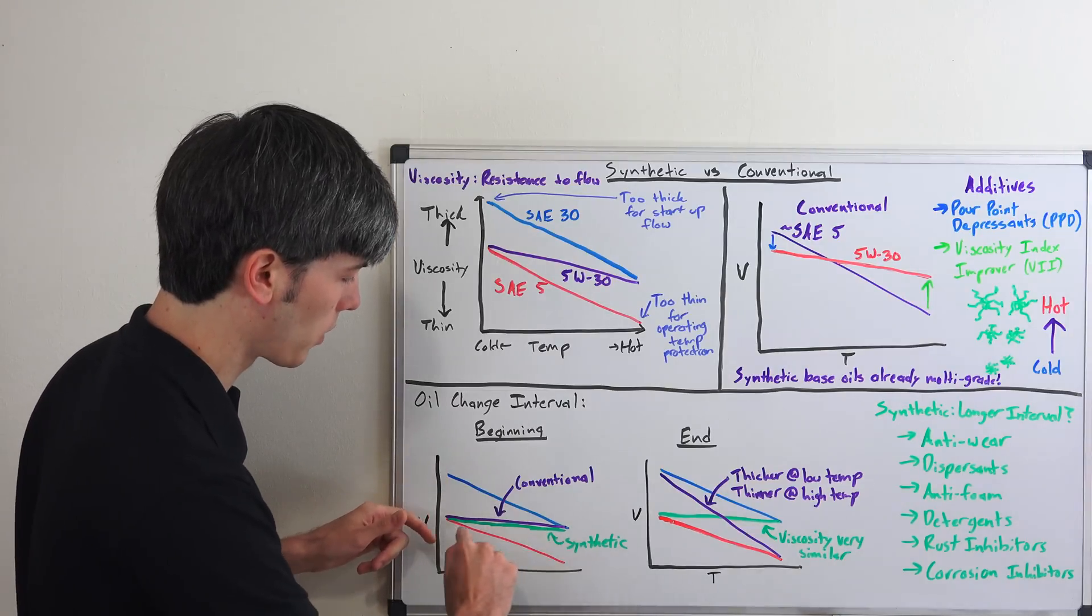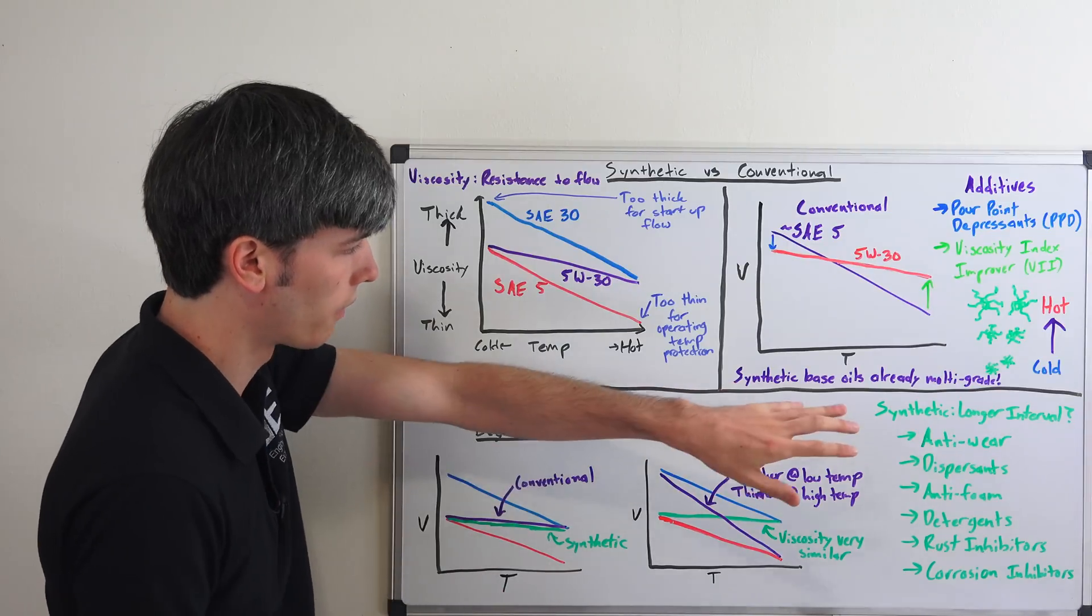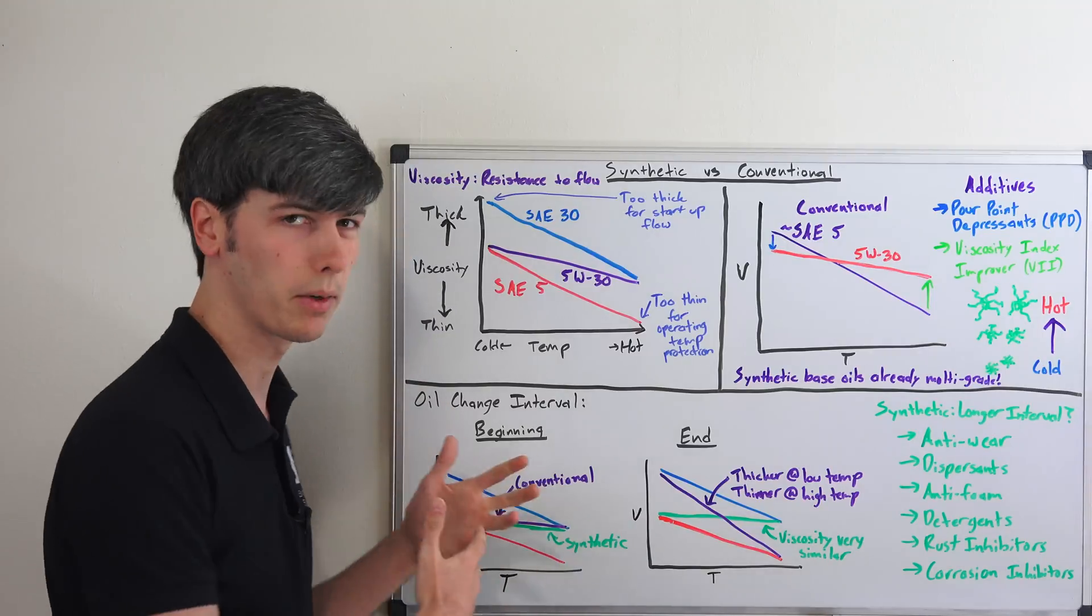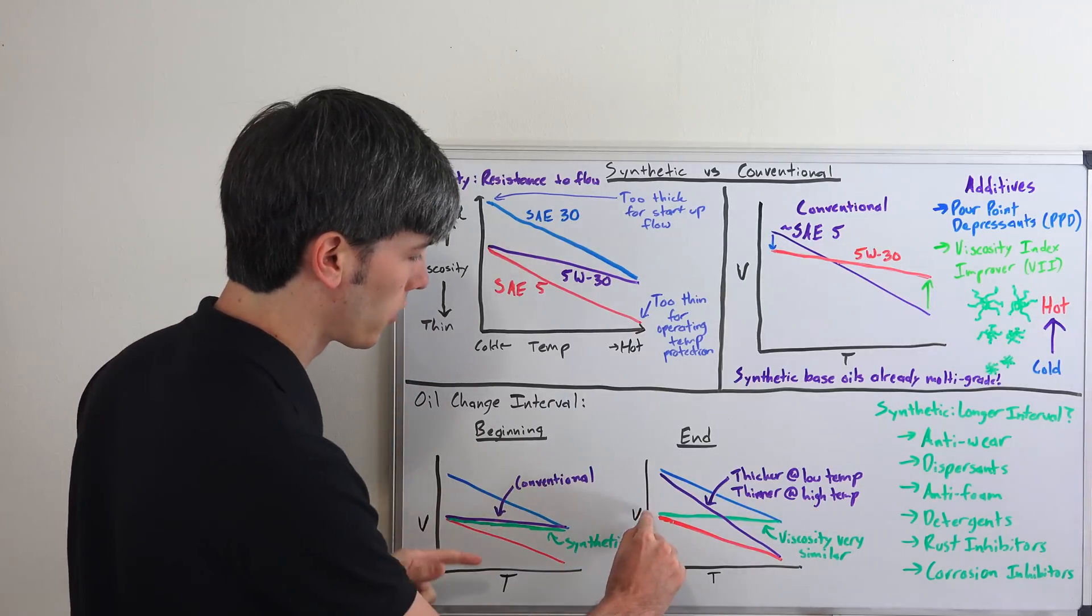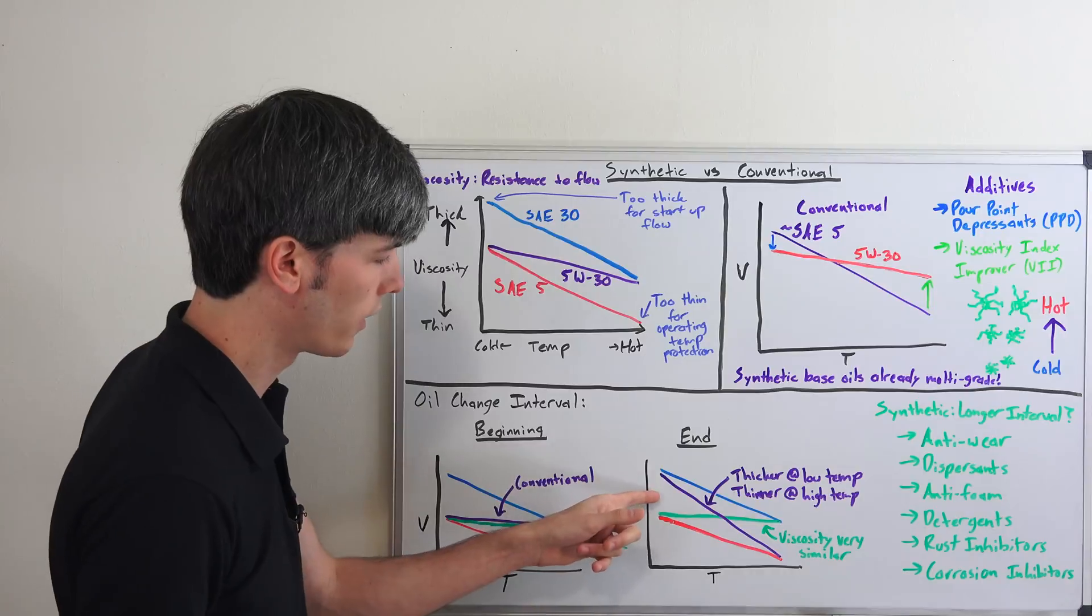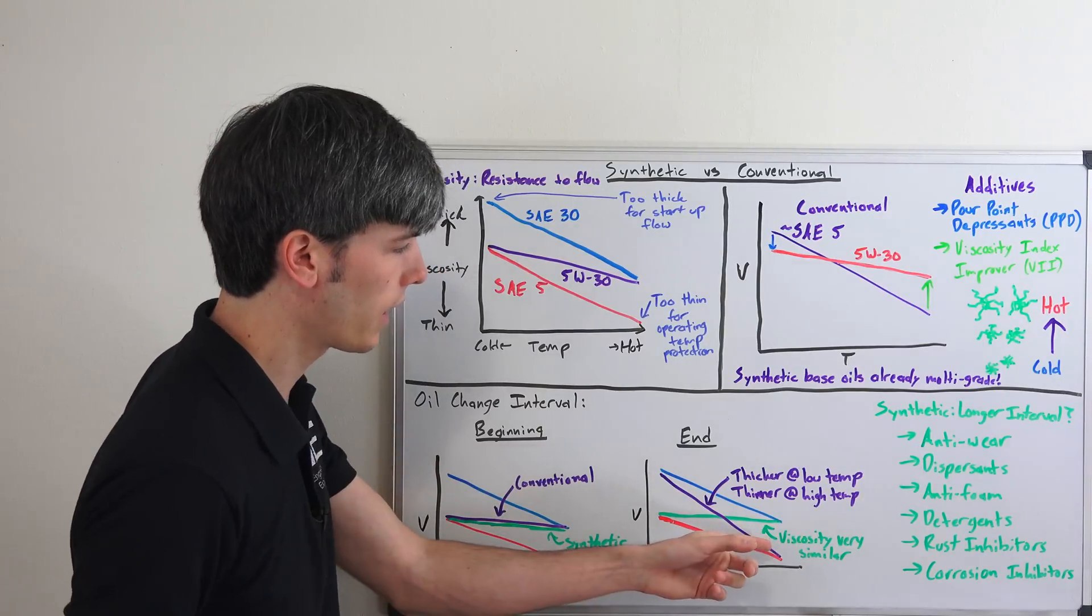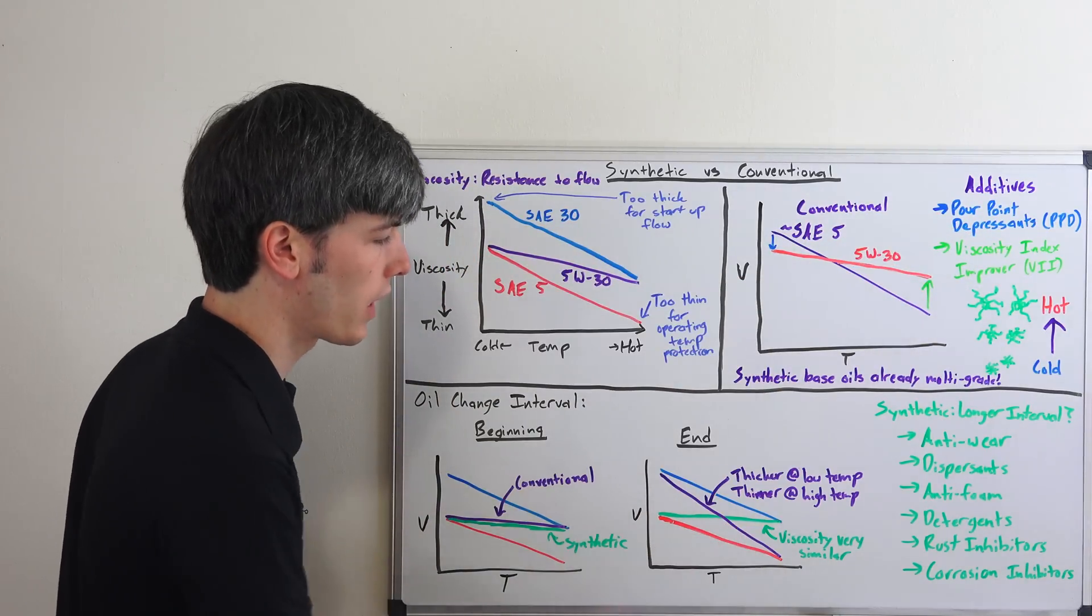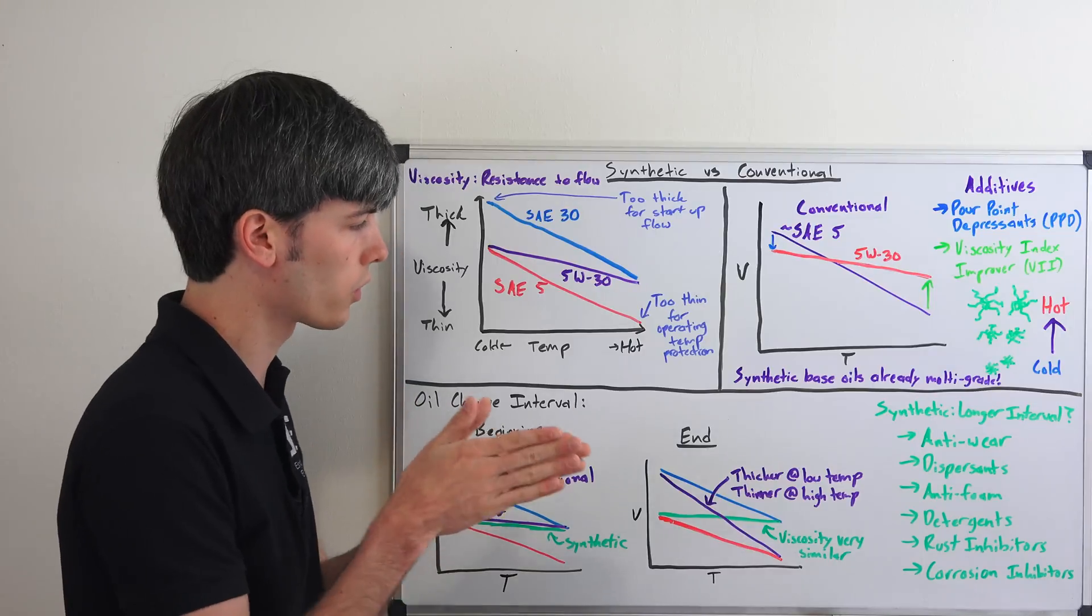And you've got that exact same curve for both conventional and synthetic but as I mentioned the base oil for synthetic is already that multi-grade so over time it doesn't really break down as much you know you are going to have deposits and things like that which are going to get in there and thicken the oil but it's going to look very similar at the end of your oil change interval versus your conventional is going to get thicker at low temperatures and it's going to get thinner at high temperatures because these additives have started to break down.